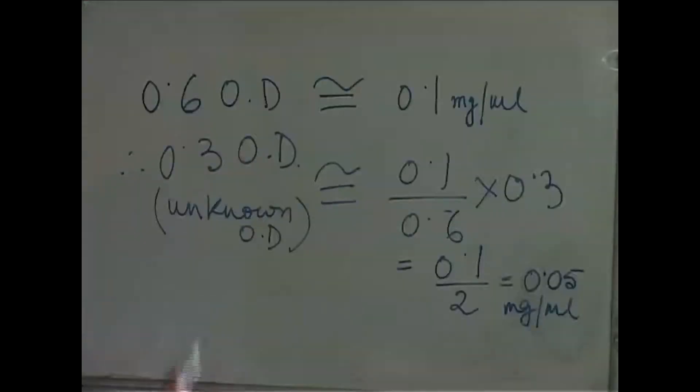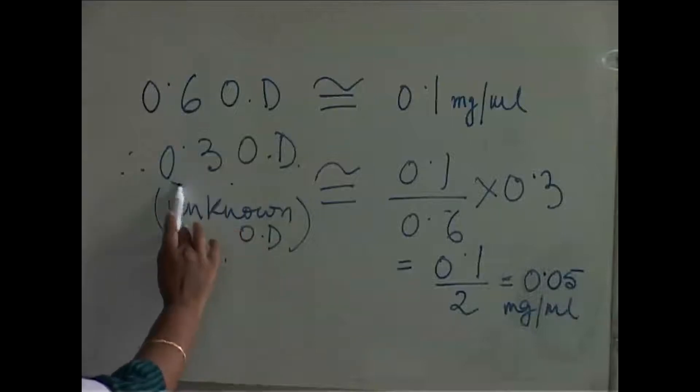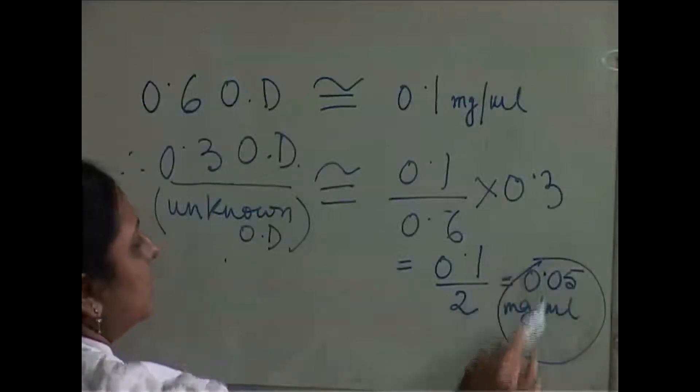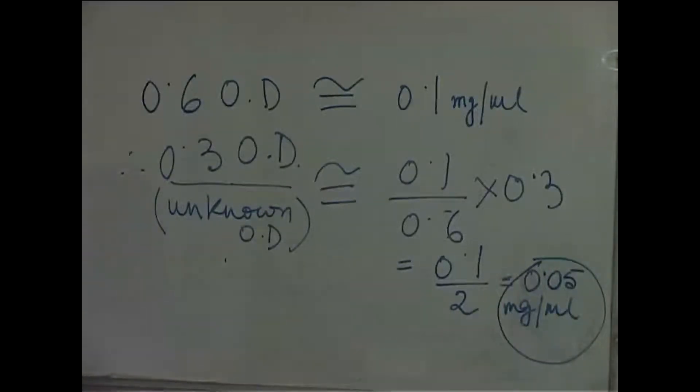Another procedure is the gross one: just by having one standard and measuring its optical density, you can compare it with the unknown and calculate the concentration by unitary method. But this is a time-saving yet very gross method, so preparing the series of standards is statistically more valid. From the standard curve, you can extrapolate and determine the concentration of the unknown.